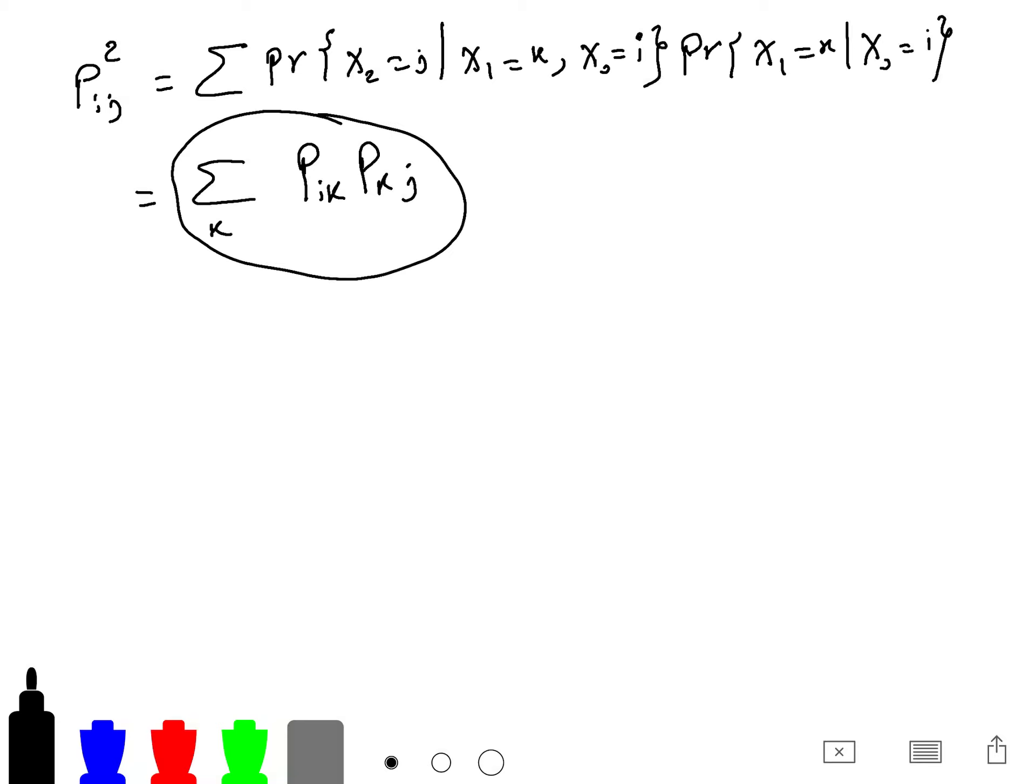So this term is the ij term of transition matrix multiplied with itself. So we call it p squared. And when we say the two-step transition probability, pij squared, we mean just elements of this p squared matrix.